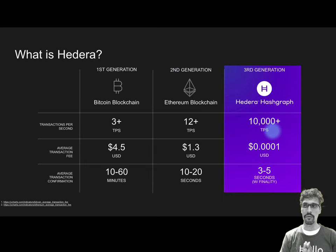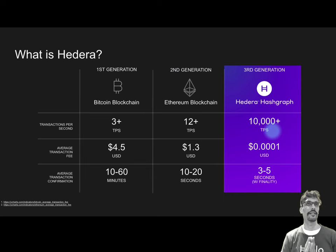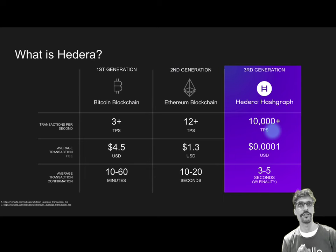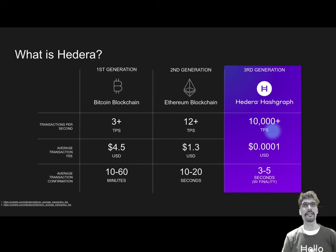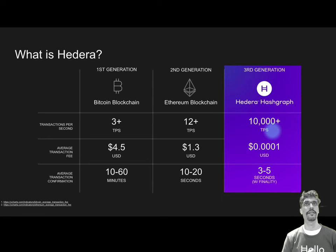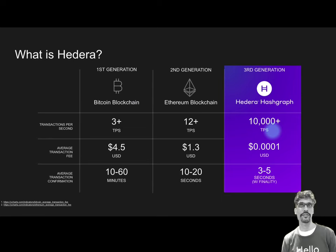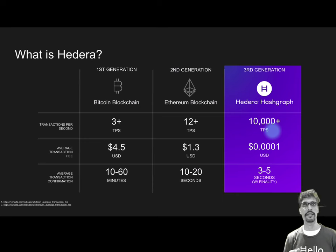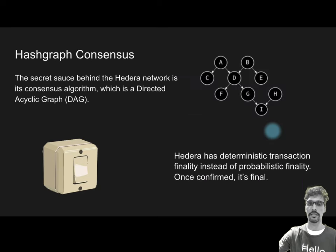Hedera is also very carbon-efficient. An independent study by LSE — the London School of Economics — found that Hedera has the lowest per-transaction carbon cost compared to any other DLT.